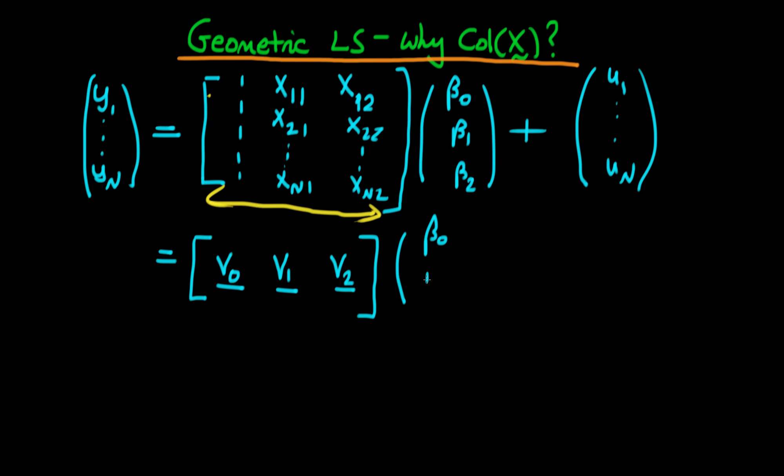And we're still multiplying this through beta naught, beta 1, times beta 2. And then we're adding on our error vector, U1 through Un.